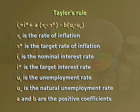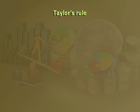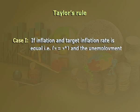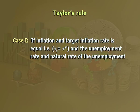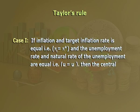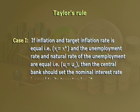According to Taylor's Rule, there are three cases. Case one: if inflation equals target inflation (π_t = π*) and the unemployment rate equals the natural rate of unemployment (u_t = u_n), then the central bank should set the nominal interest rate i_t equal to its target value i*. By doing this, the economy stays on the same path with inflation equal to the target and unemployment equal to the natural rate. This is known as full employment equilibrium, where actual GDP equals potential GDP.